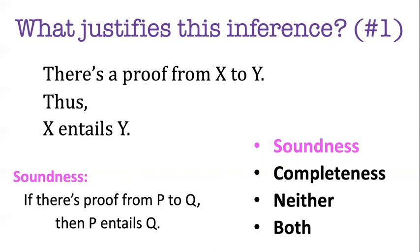And that might help you remember to keep the two concepts distinct. Because a sound formal system is not the same thing as a sound argument. They're very different. This is what soundness means when we're talking in metalogic. It means whenever there's a proof in our formal system from p to q, p actually does entail q.